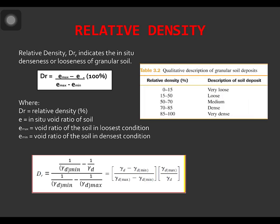The values of the relative density may vary from a minimum of 0 for a very loose soil to a maximum of 1 for a very dense soil.